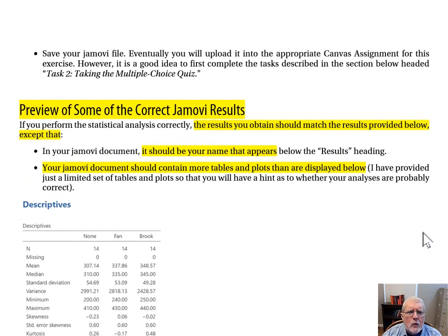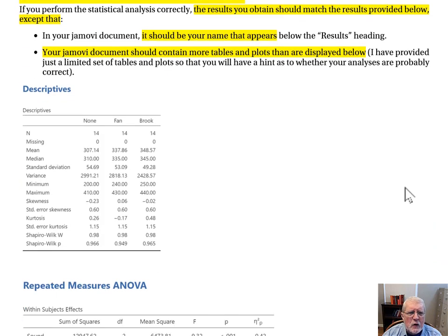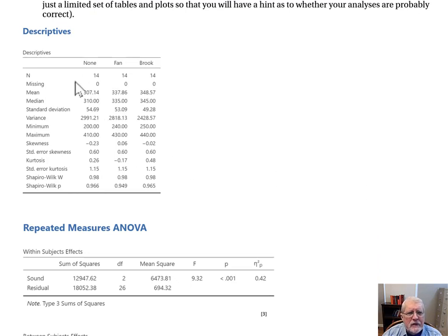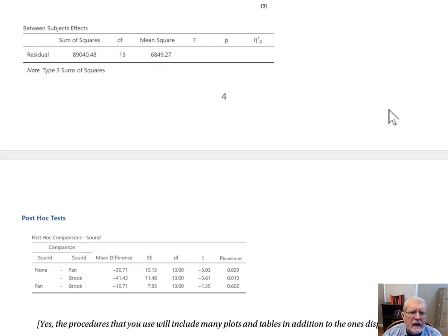We continue to page 4: A Preview of Some of the Correct Jamovi Results. If you perform your analysis correctly, the results you obtain should match the results provided below, except that it should be your name that appears, and your Jamovi document should contain more tables and plots than are displayed. Compare the statistics you obtained against the statistics in my preview section and make sure that they match. For example, when you look at the descriptives table, did you get the same mean score for the none condition, the fan condition, and the brook condition? When you look at the results from the Repeated Measures ANOVA Procedure, did you get the same F statistic and the same partial eta squared that I obtained?